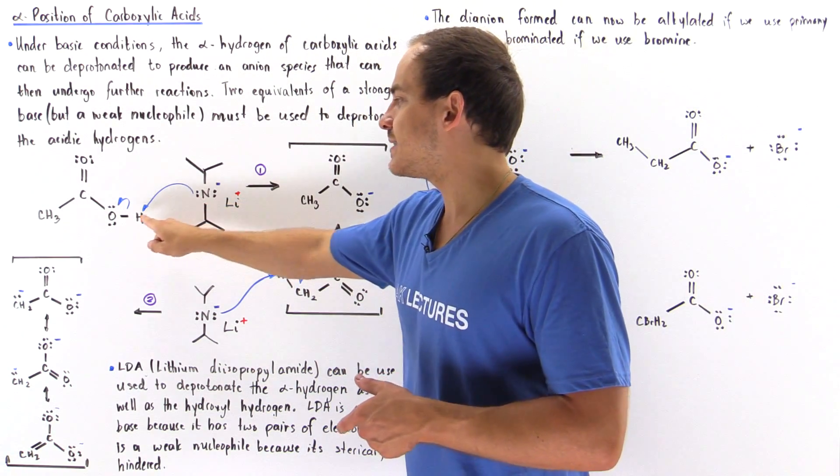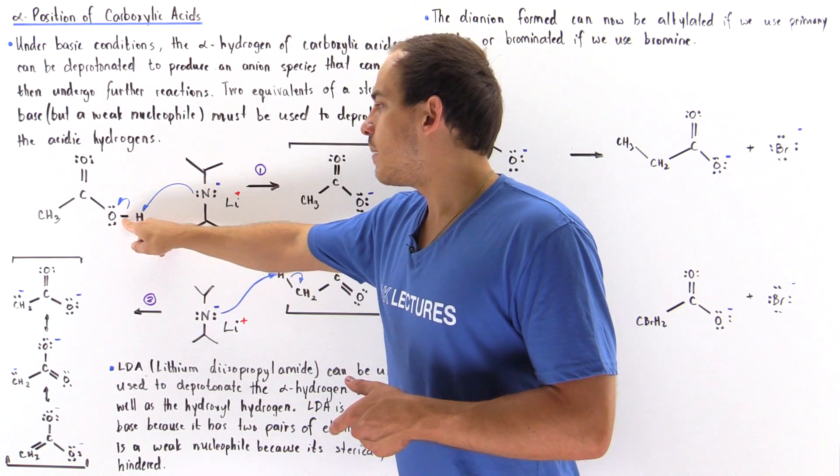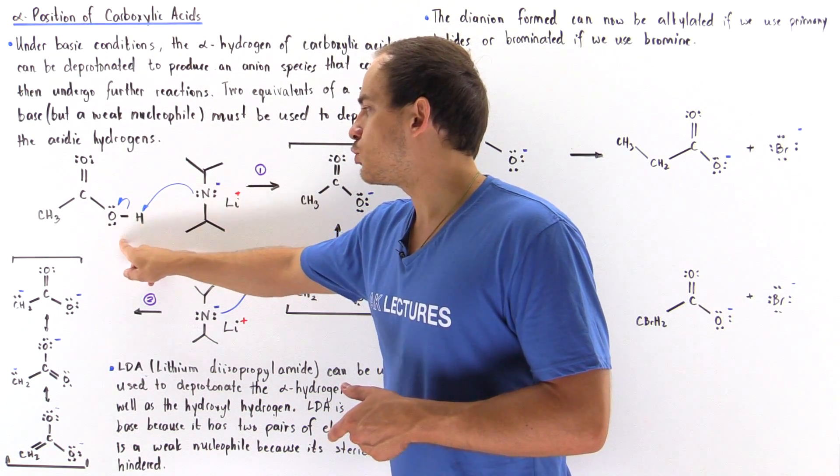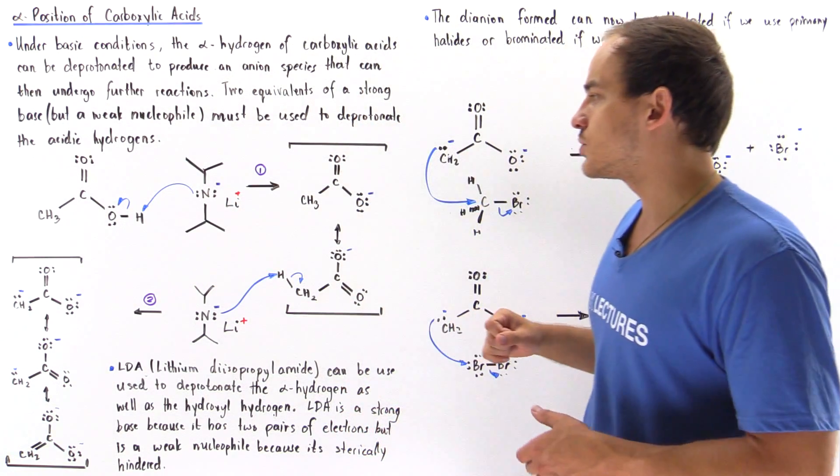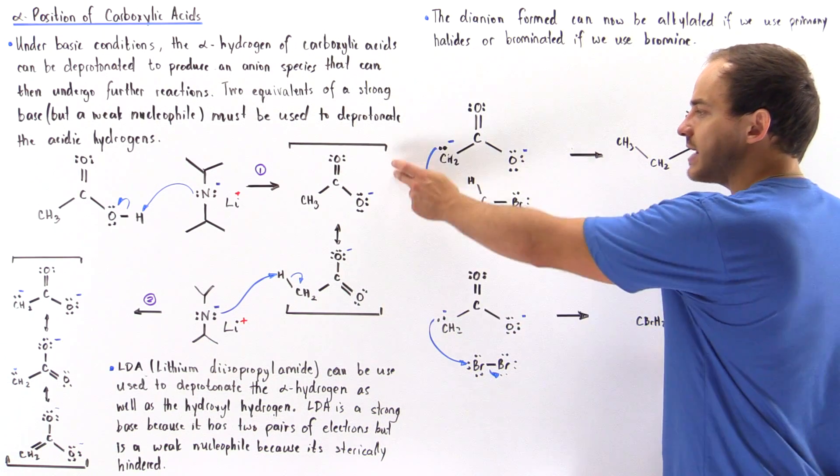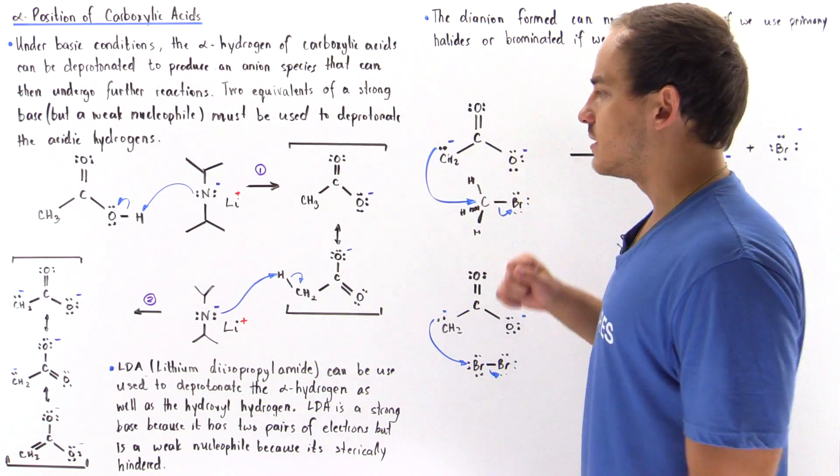So this acts as a base, attacks the H atom, breaking this bond and placing two electrons onto this oxygen. So we have resonance stabilization on this carboxylate ion.